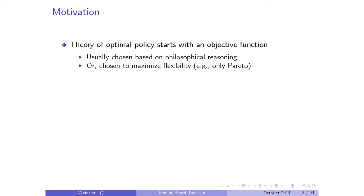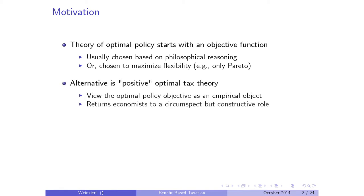If we're uncomfortable taking such a strong stand, we might step way back and say let's just maximize flexibility—for economists that means imposing only Pareto efficiency. The alternative I've been exploring is what I call positive optimal tax theory: the notion of viewing this objective as an empirical object. So let's go out and ask people, or figure out, what we think the prevailing objective function might be that informs tax policy.